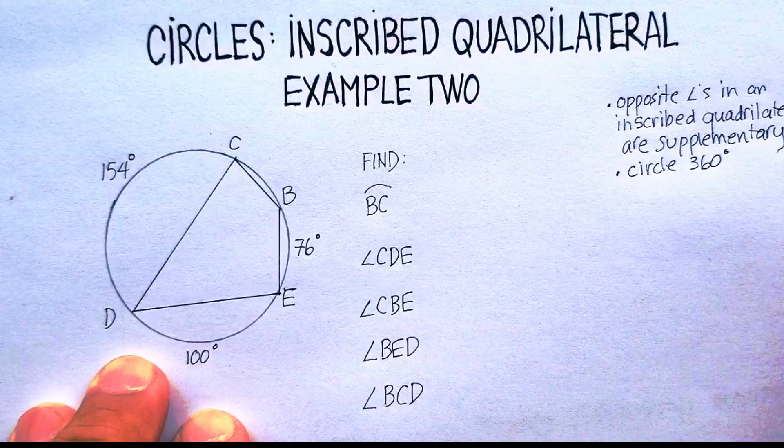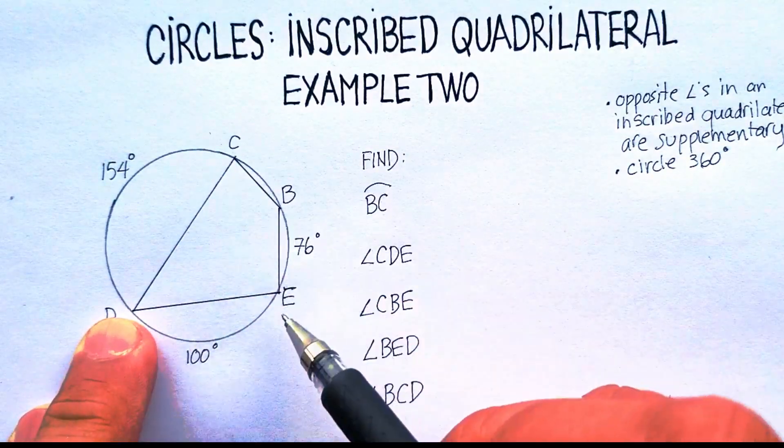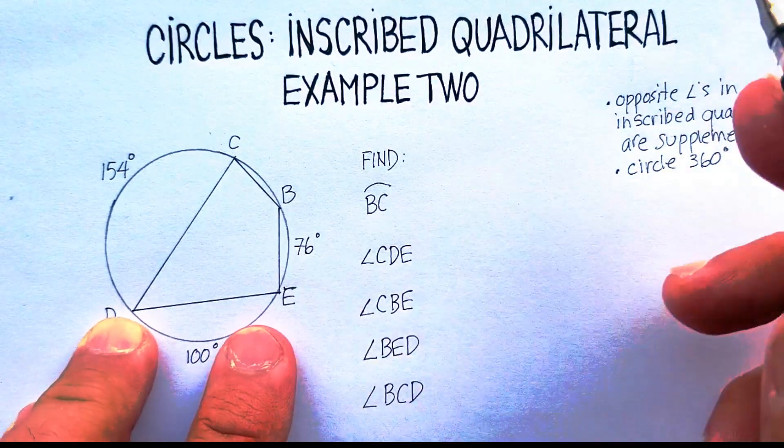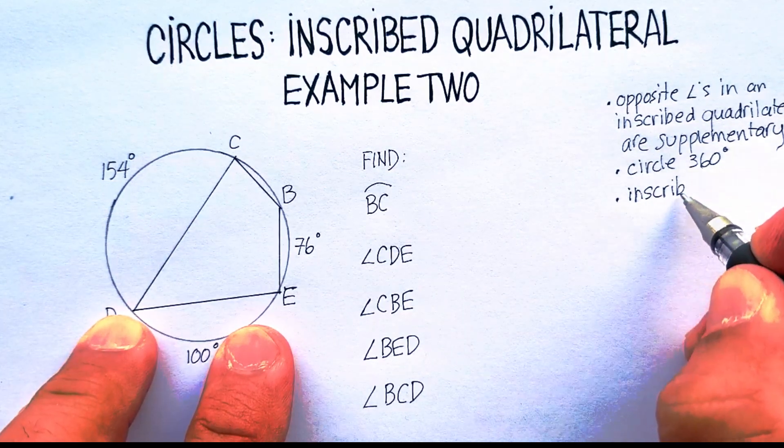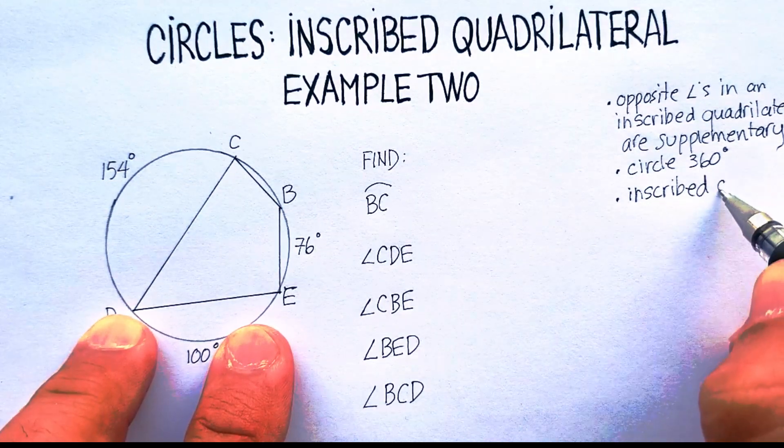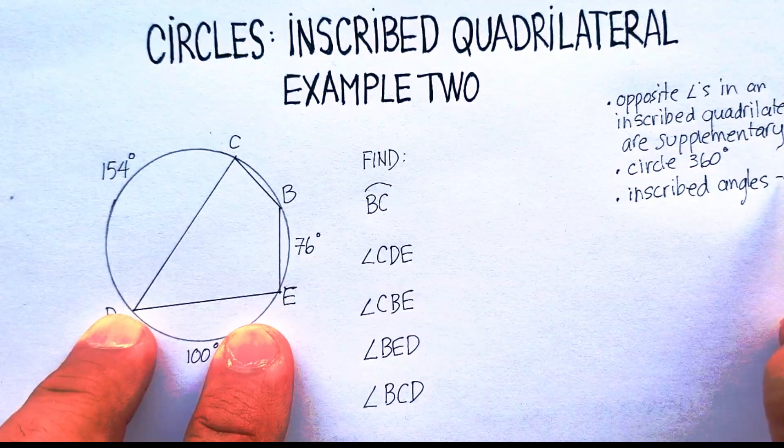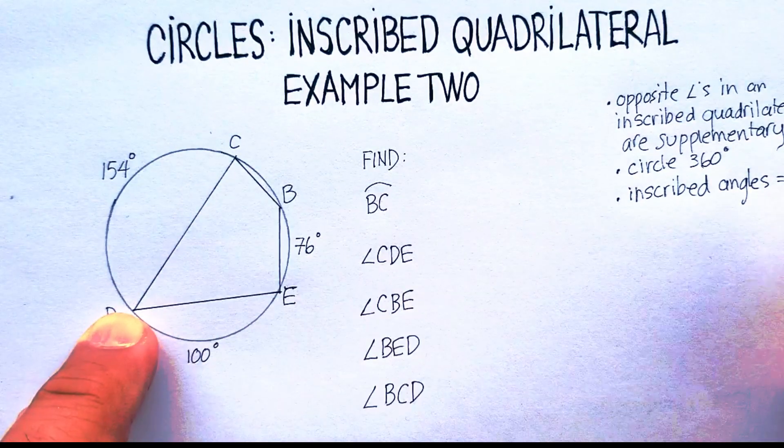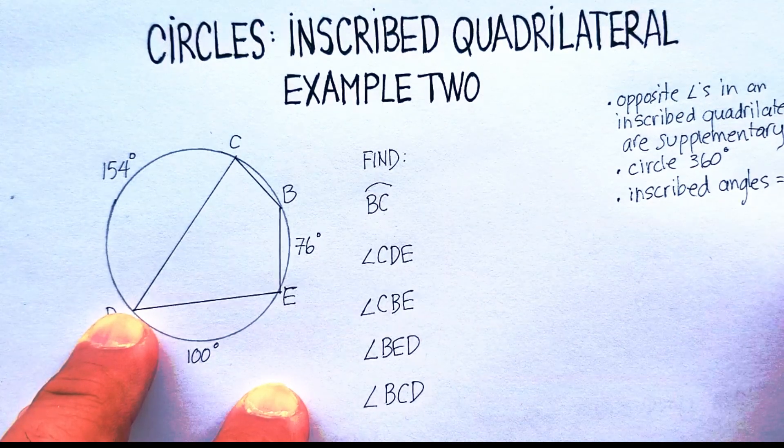So with that in mind, I can actually... Oh, by the way, I also know that an inscribed quadrilateral is a series of inscribed angles. And inscribed angles are always equal to one-half of the intercepted arc.